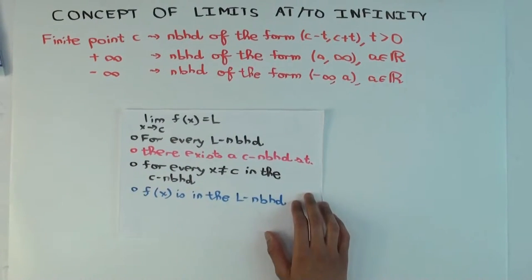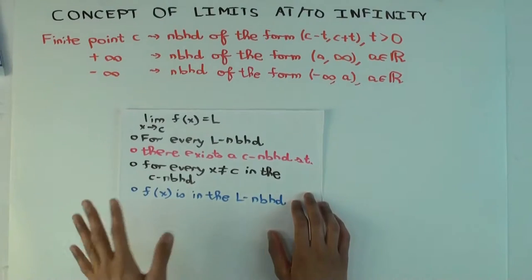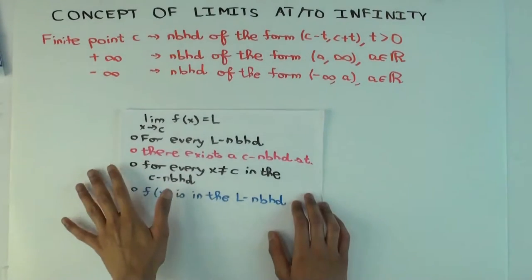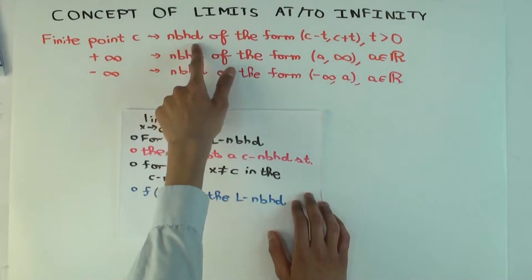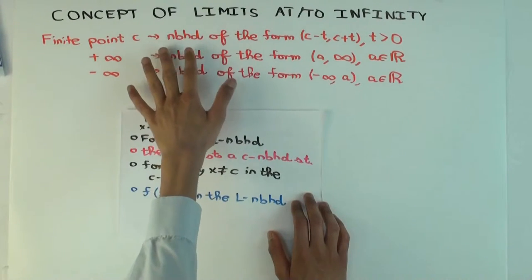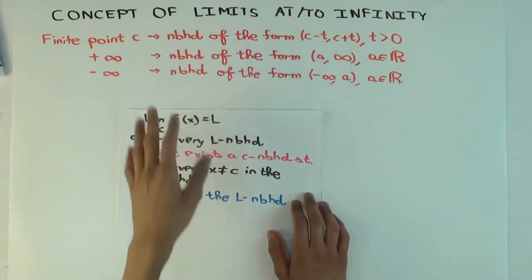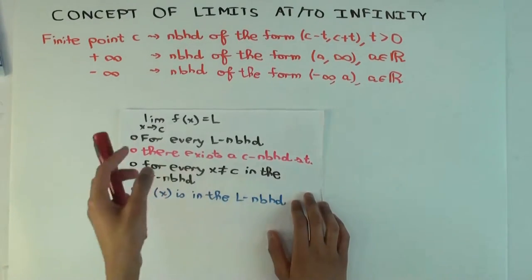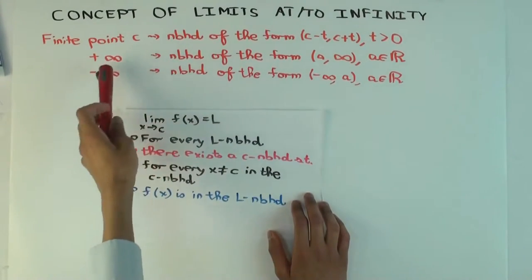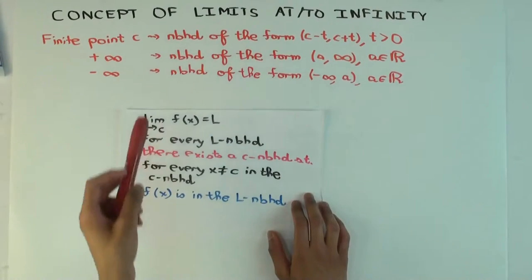The general idea of neighborhood has something to do with advanced concepts in topology and analysis, but we don't actually want to do the general thing. I abbreviate neighborhood as 'nbhd' just to save space — it's the usual neighborhood meaning things which are close by.